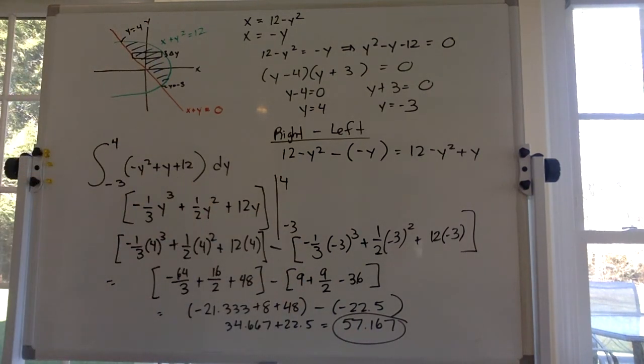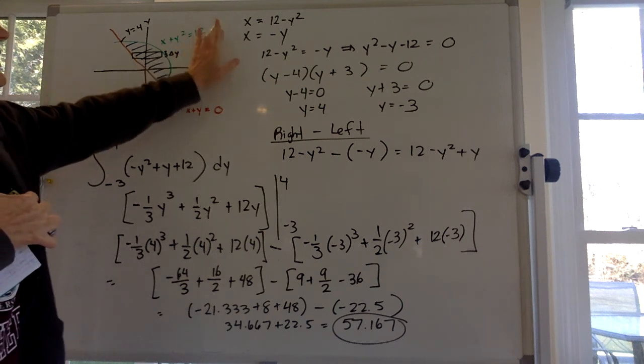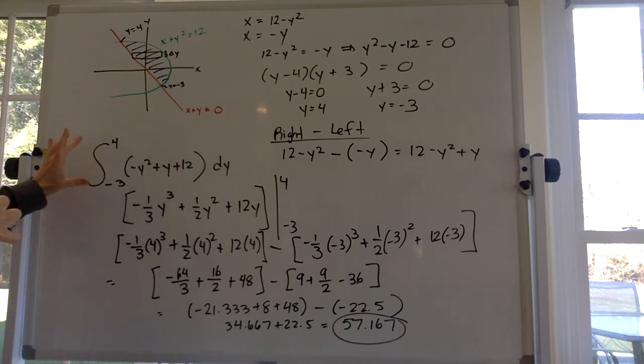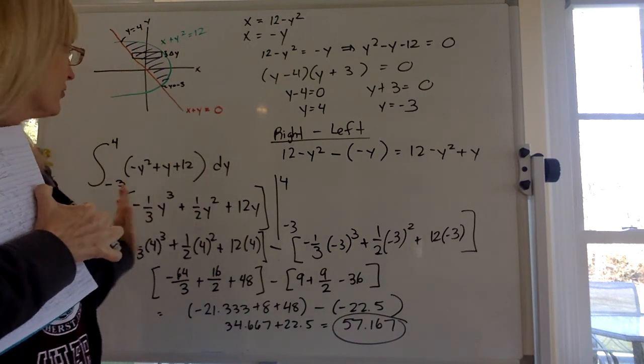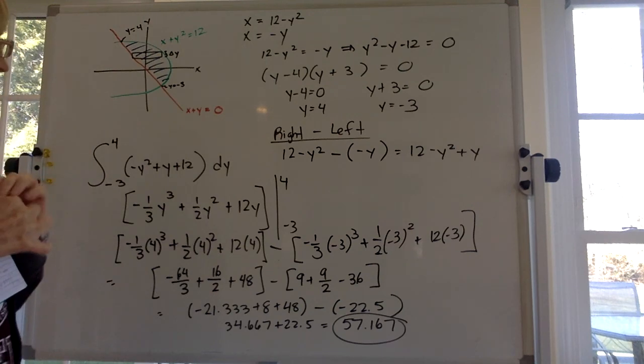Okay, so be careful with the math, but basically that's what we did. This time we did right function minus left function, get everything in terms of y, set the x's equal to each other to find the y-intercepts, those are the limits on your integration, do the right function minus the left function to find out what you're going to integrate, and then do the integration. And I think it works.